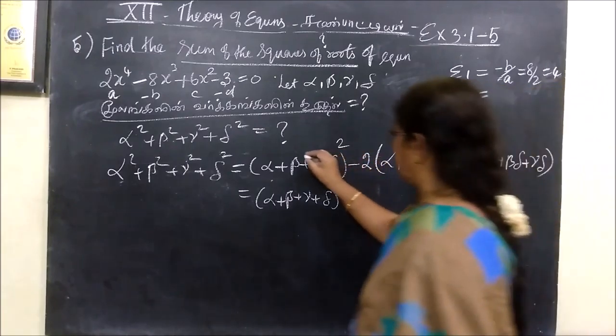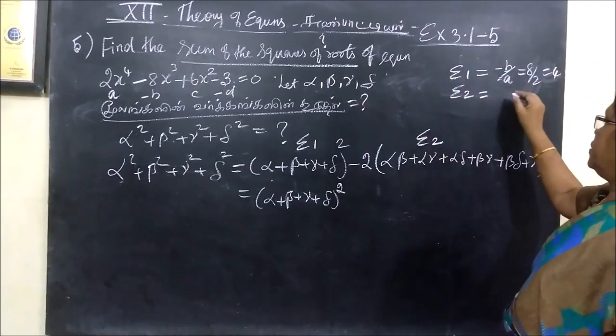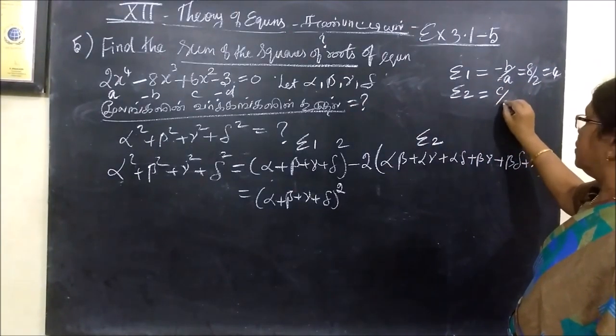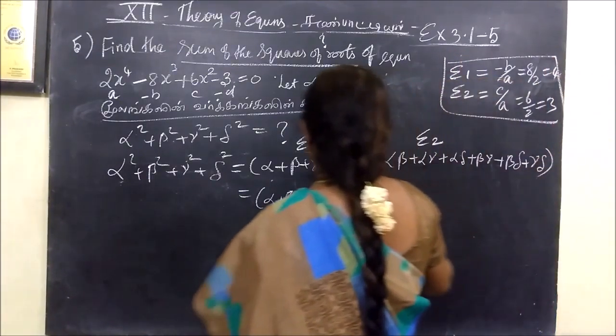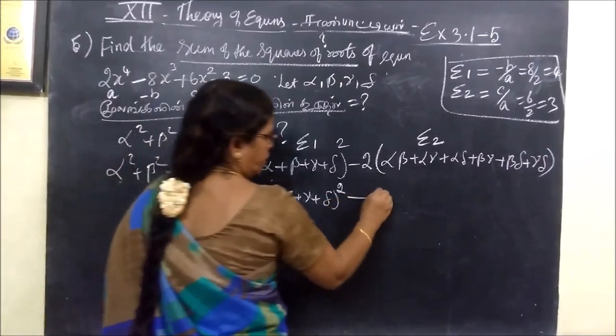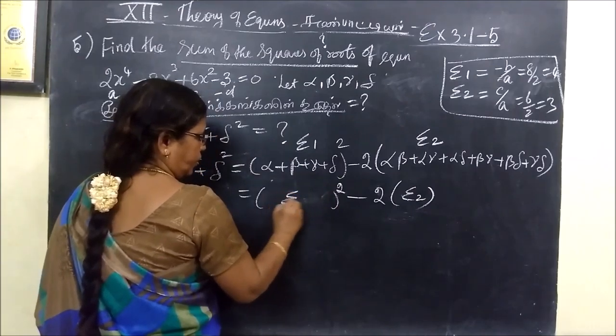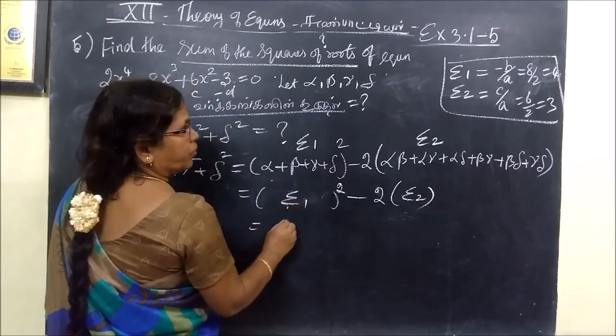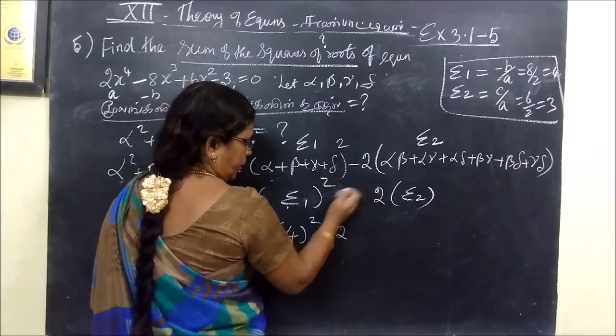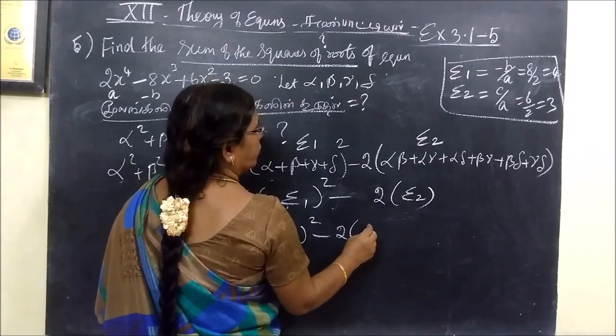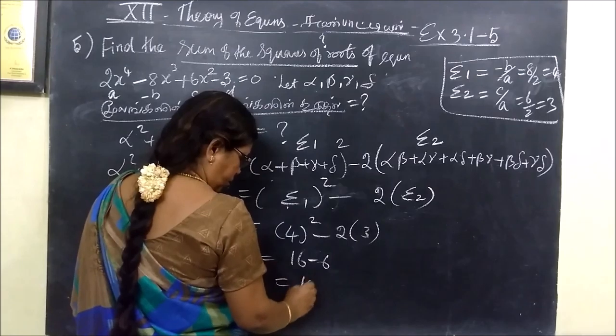Sigma2, this is Sigma2. C by a, so 6 by 2 equals 3. The answer: Sigma1 squared is 4 squared minus 2 brackets Sigma2. Sigma2 is 3, so the answer.